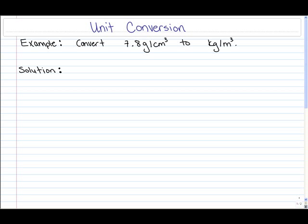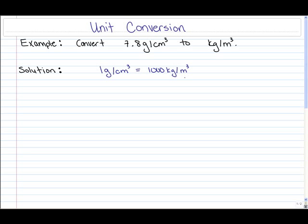Pause the video now and convert 7.8 grams per cubic centimeter to some amount of kilograms per cubic meter. Now why is one gram per cubic centimeter equivalent to a thousand kilograms per cubic meter? Let's take a look at why that is so.